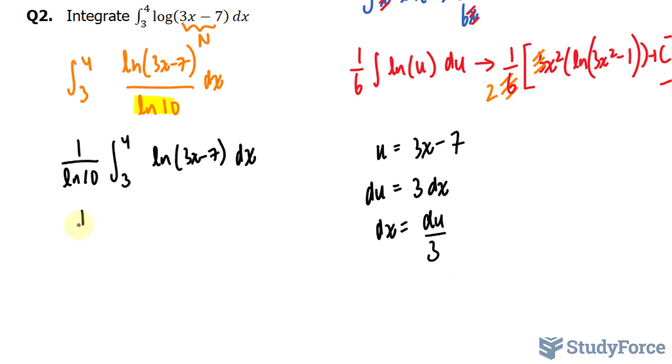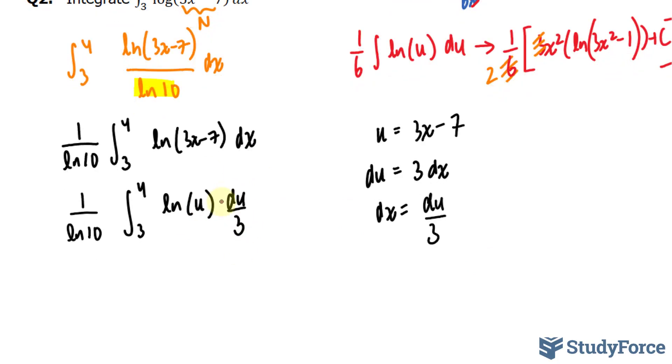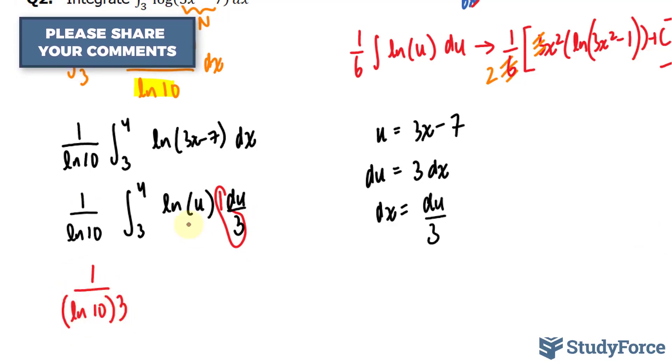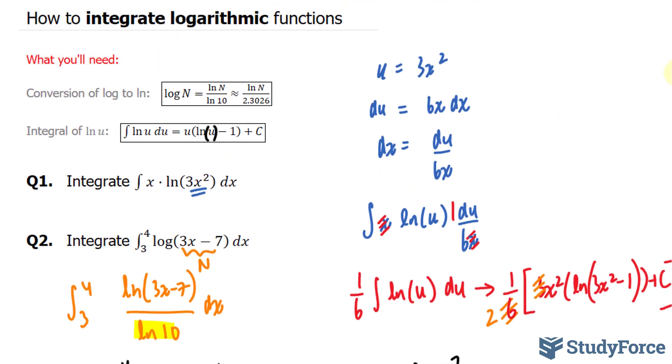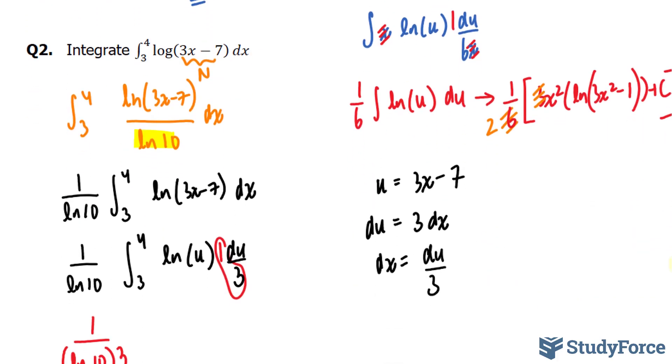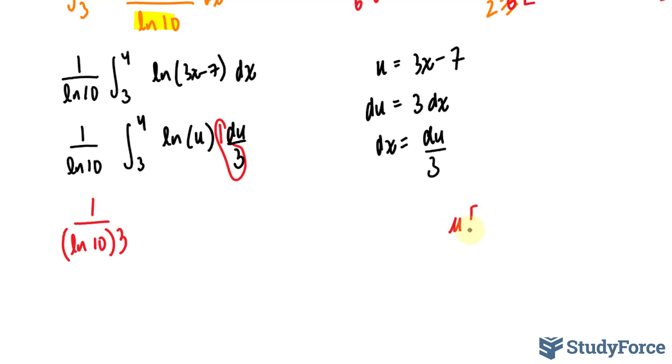What I have now is 1 over ln 10, the integral between 3 and 4, ln u, dx has become du over 3. Next, I'll pull out this 1 over 3 outside of the integral, where I have 1 over ln 10 times 3. And to find the integral of ln u, I'll use the following, where I have u times ln u minus 1. So let's write that down so we won't forget. u times ln u minus 1.